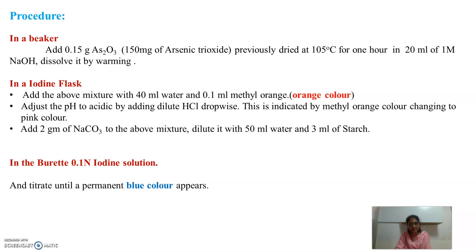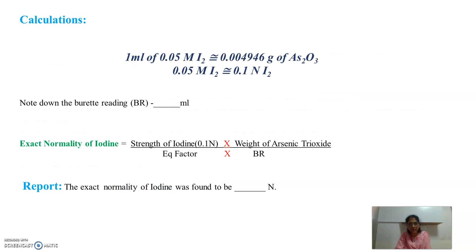For the calculation: each ml of 0.05 molar iodine solution is equivalent to 0.004946 grams of arsenic trioxide. Note that 0.05 molar iodine solution is equivalent to 0.1 N iodine solution.